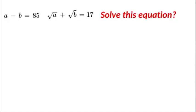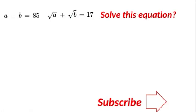Hello everyone, welcome back to the channel. Today we have a radical equation: a minus b is equal to 85, and the square root of a plus the square root of b is equal to 17, and we need to solve this equation. Try it yourself first and pause the video. If you're new to the channel, don't forget to give it a thumbs up and subscribe.